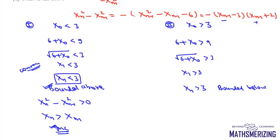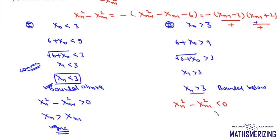If xn is greater than three, then the factor (xn minus one minus three) is positive and (xn minus one plus two) is also positive. With the minus sign, we get xn squared minus xn minus one squared less than zero, that is xn is less than xn minus one — the sequence is a decreasing sequence.